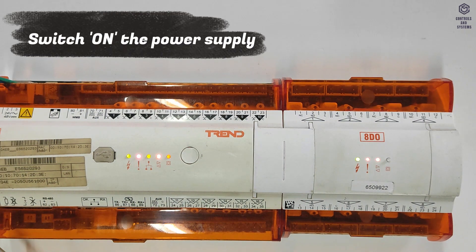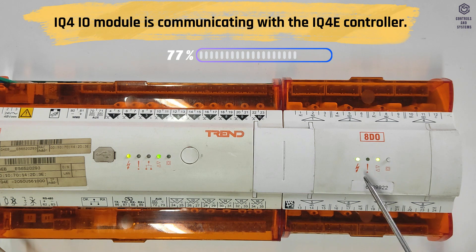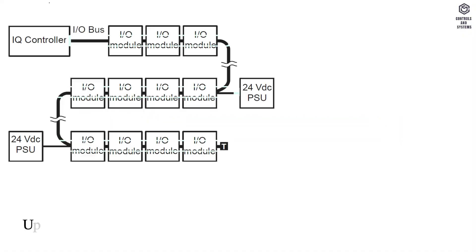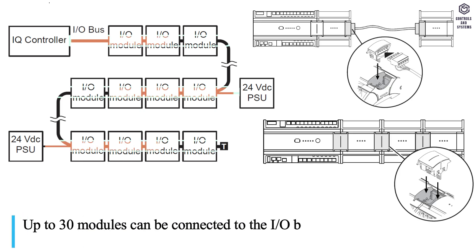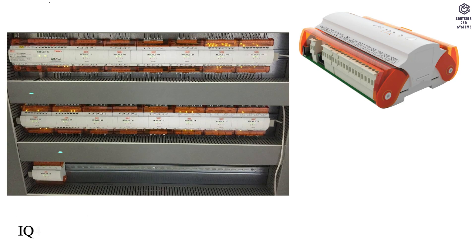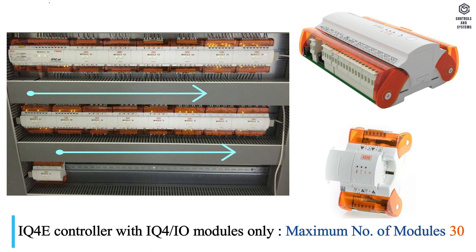Switch on the IQ4E controller power supply. Now the IQ4 I.O. module is communicating with the IQ4E controller. Up to 30 modules can be connected to the I.O.Bus. Depending on the configuration of controller and modules used, the IQ4E controller can communicate with a maximum of 30 IQ4 I.O. modules only.